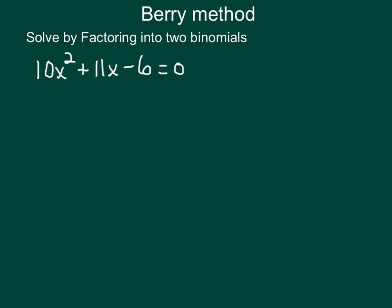Okay, this one we're going to solve by factoring. Specifically, we're going to be using the Berry method. The first thing we need to do is identify our a, b, and c. a is the first term in front of the x squared. b is our linear term in front of the variable, and c is our constant.